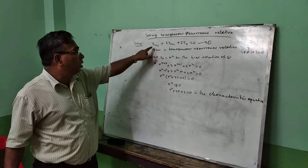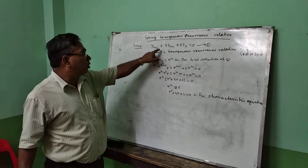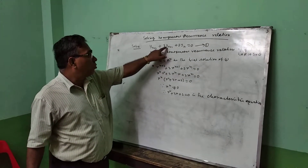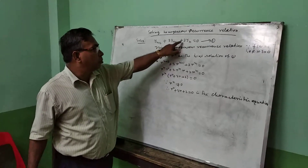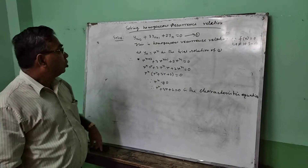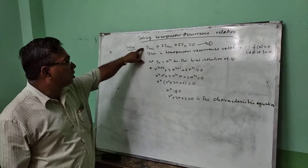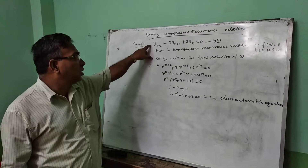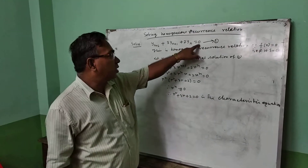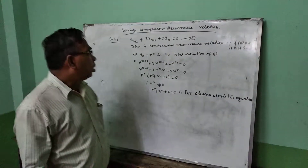I am taking here one problem: y(n+2) + p·y(n+1) + 2·y(n) = 0. This is a homogeneous recurrence relation since the right side is equal to 0.